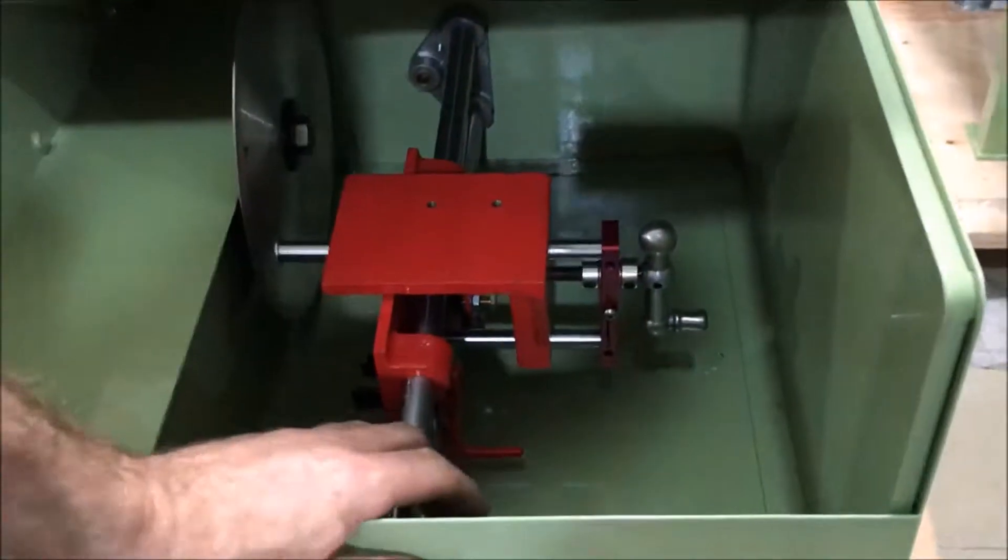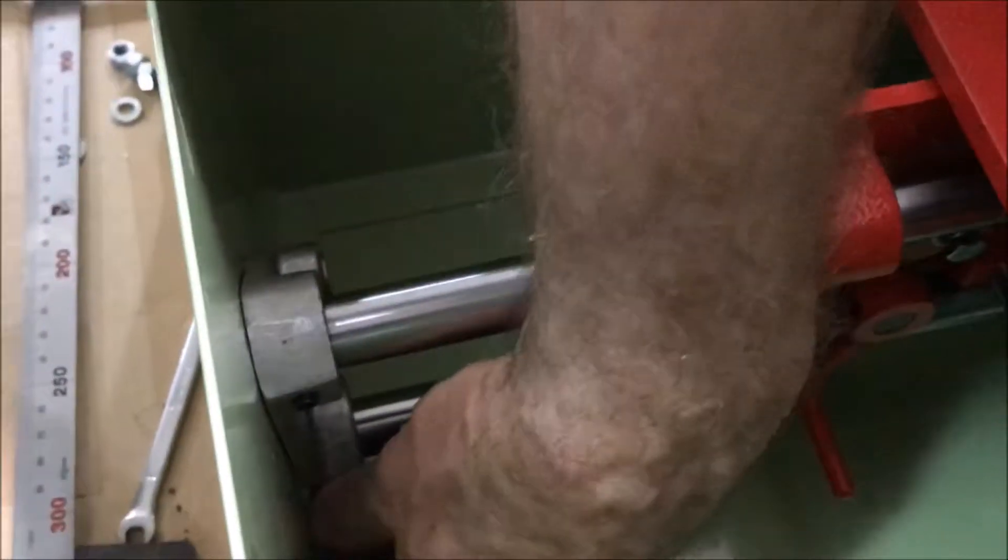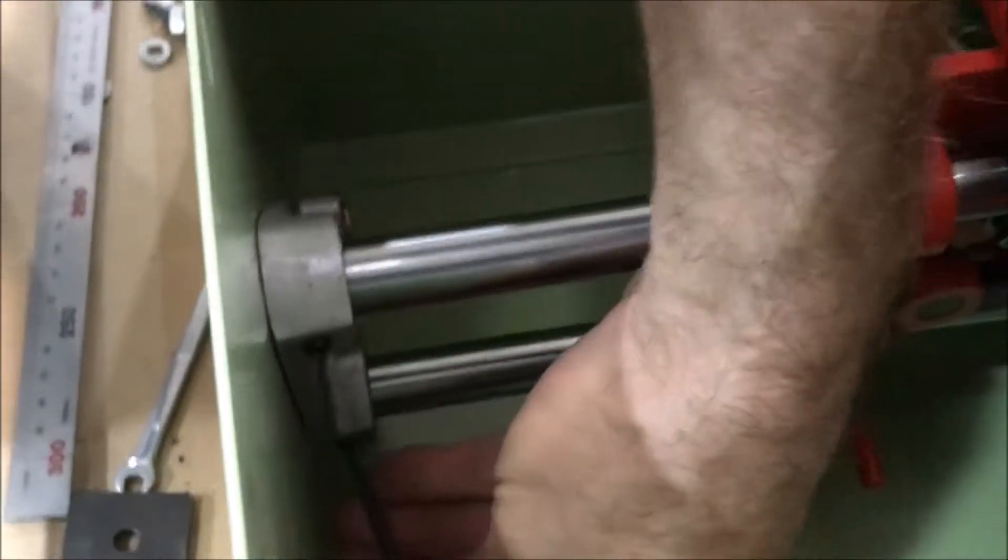Now you've also undone the set screws on the rail, right? Yeah, and you have to undo these two set screws. Likewise, when you put it back in, you want to do those up to secure your rails.